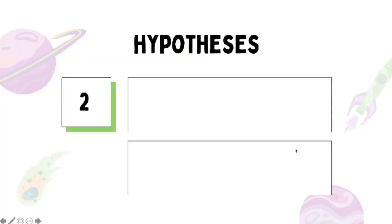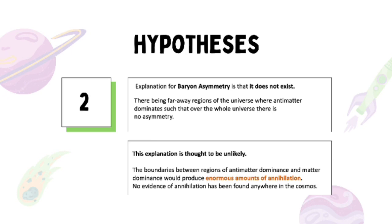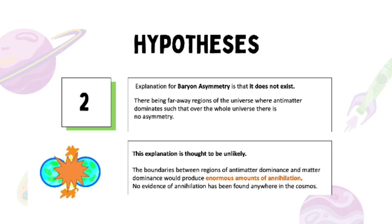Another possible explanation for baryon asymmetry is that it does not exist. This could be explained by there being far-away regions of the universe with antimatter dominance, such that across the whole universe there is no asymmetry. In this proposed region, you could perhaps find antimatter galaxies, stars, and even planets. This explanation is thought to be unlikely, since the boundary between regions of antimatter dominance would produce enormous amounts of observable annihilation, and no such evidence of annihilation has been found anywhere in the cosmos.